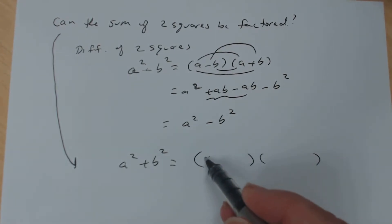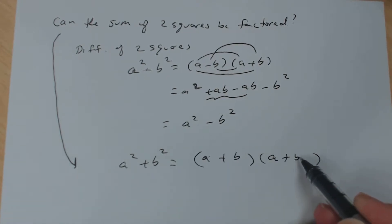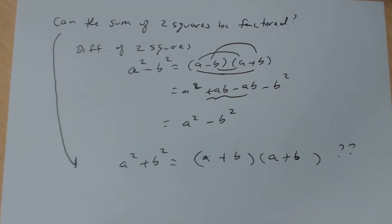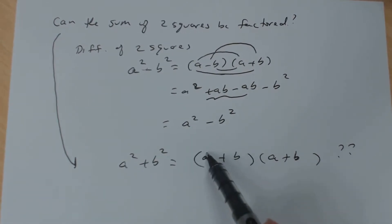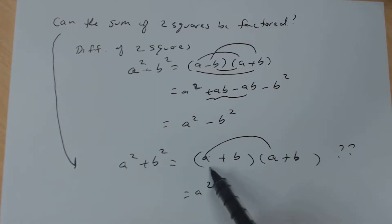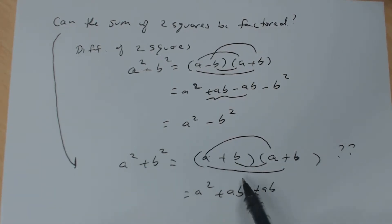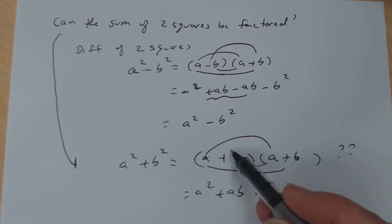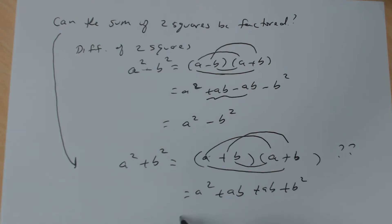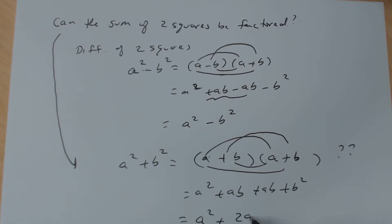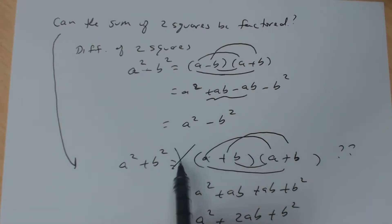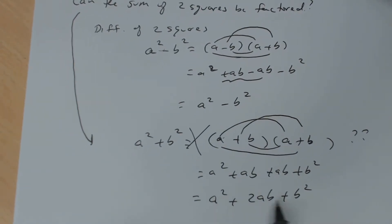Let's try (a + b)(a + b) and see if that works. Using FOIL: first is a², outer is ab, inner is ab — and right away you know it won't work because those combine to give 2ab. Last term is b². So we get a² + 2ab + b², which is a trinomial, not a² + b².